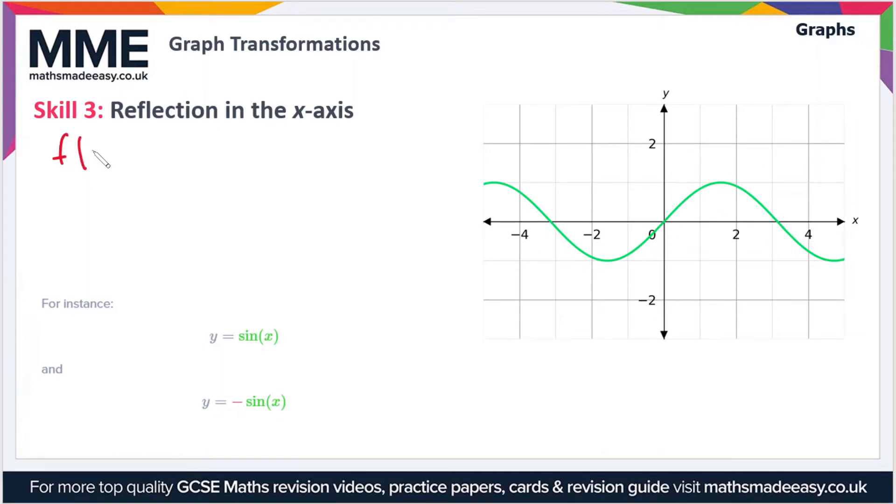As a function, if we have the function f(x), then to flip it in the x-axis we would then have the function -f(x).